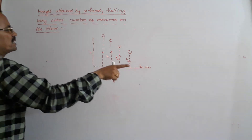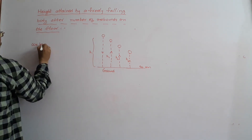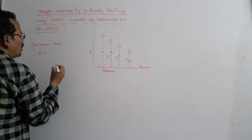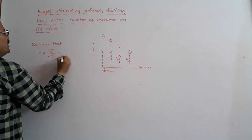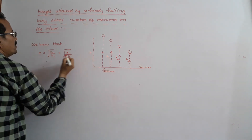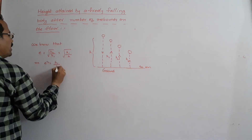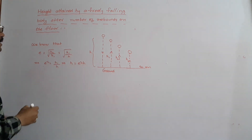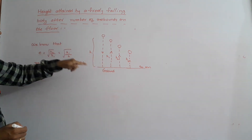From the previous discussion, we know that the coefficient of restitution E is equal to the square root of H1 by H. So E squared is equal to H1 by H, which implies H1 is equal to E squared times H. This is the height attained by the body after the first collision.